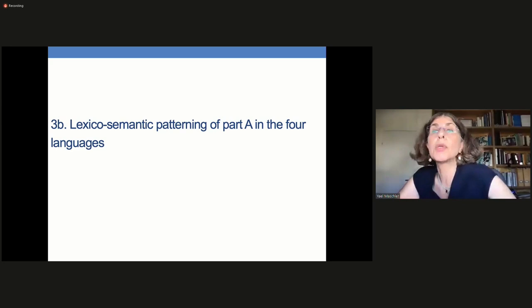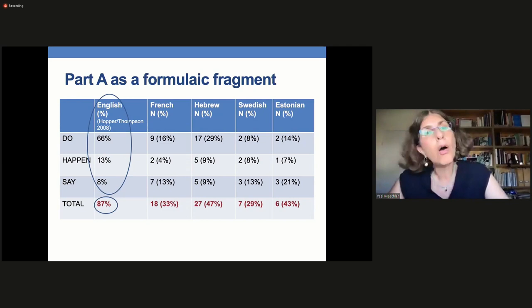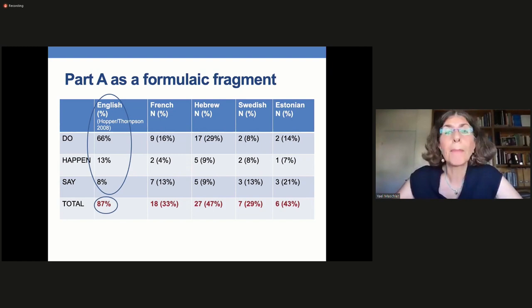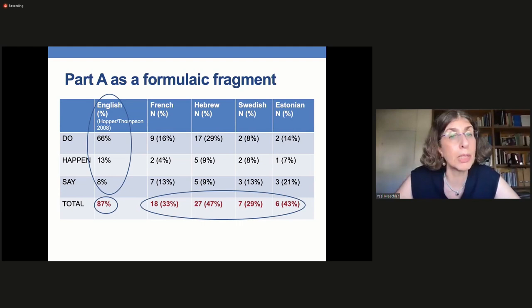Our studies are based on four comparable datasets of audio and video recorded casual conversation among friends and relatives in French, Hebrew, Swedish, and Estonian. The French data show an average of 4.1 pseudo-clefts per hour, the Hebrew 3.3, the Swedish 1, and the Estonian only 0.3 tokens per hour. In our data, the construction is most frequent in French, next in Hebrew, less so in Swedish, and it's very infrequent in Estonian, resulting in the cline you see on the slide.